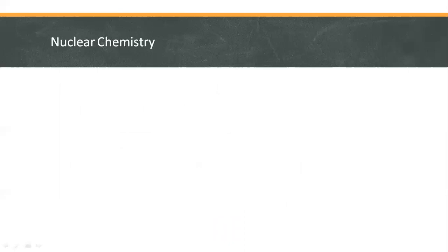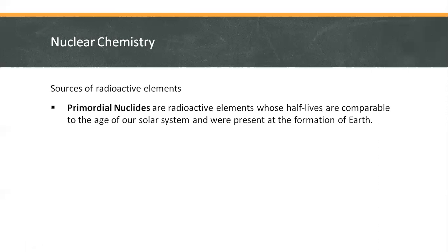Nuclear chemistry is the sub-discipline of chemistry that is concerned with changes in the nucleus of elements. These changes are the source of radioactivity and nuclear power. There are essentially three sources of radioactive elements. First, primordial nuclides are radioactive elements whose half-lives are comparable to the age of our solar system and were present at the formation of Earth. These nuclides are generally referred to as naturally occurring radioactivity and are derived from the radioactive decay of thorium and uranium.